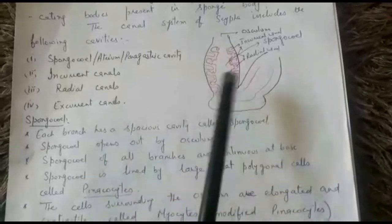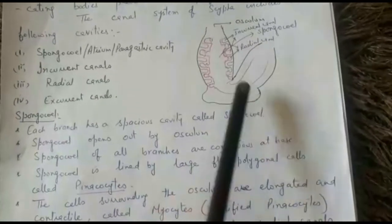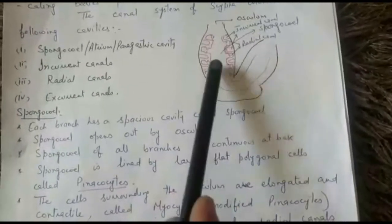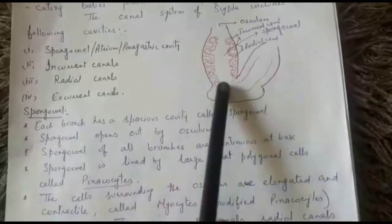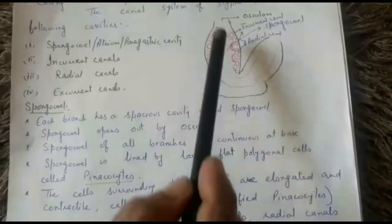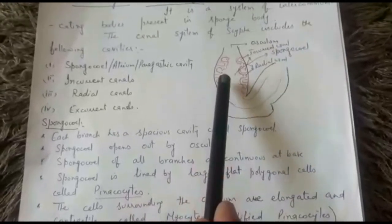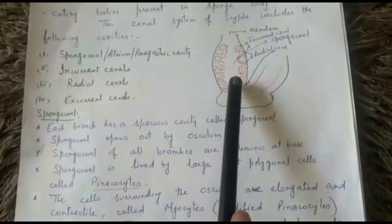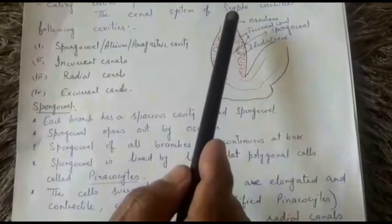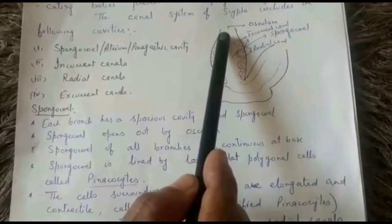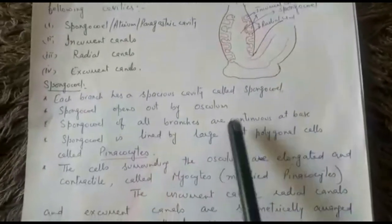First is the spongocoel, which is present in the center of each branch of the colony. The spongocoel of all branches are connected at the base. In each branch, the spongocoel opens out by means of an osculum. This spongocoel is lined by flattened cells known as pinacocytes. The cells that cover and surround the osculum and the dermal ostia are modified pinacocytes called myocytes.